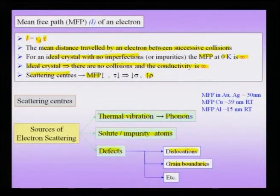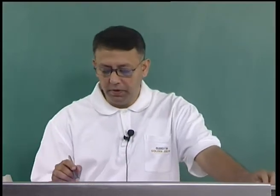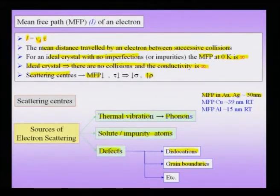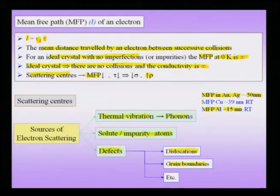Instead of the mean free path being infinity, it typically reduces to a very small number. For a good conductor like gold or silver, the mean free path is about 50 nanometers. For a slightly less conducting material like aluminum, the mean free path has already reduced to about 15 nanometers, and for copper it is about 39 nanometers. Clearly, the mean free path is of the nanoscale.